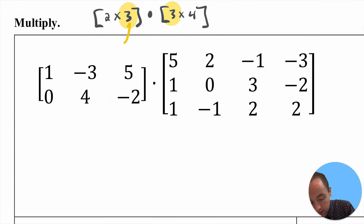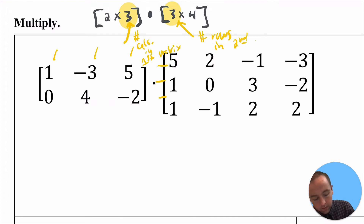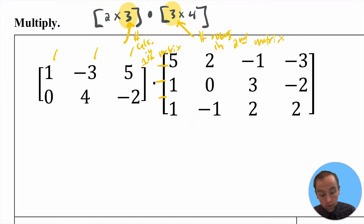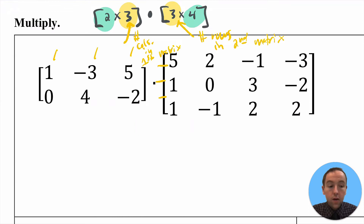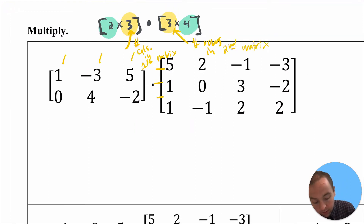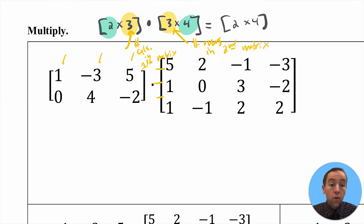Specifically, this middle number is telling you the number of columns in the first matrix, and this other middle number is telling you the number of rows in the second matrix. Because those numbers are the same, you're actually able to multiply these two matrices together. And when you get your answer, it's really convenient that these two outer numbers — the two and the four — tell you the dimensions of the product. So we're going to get an answer that is a matrix with two rows and four columns.